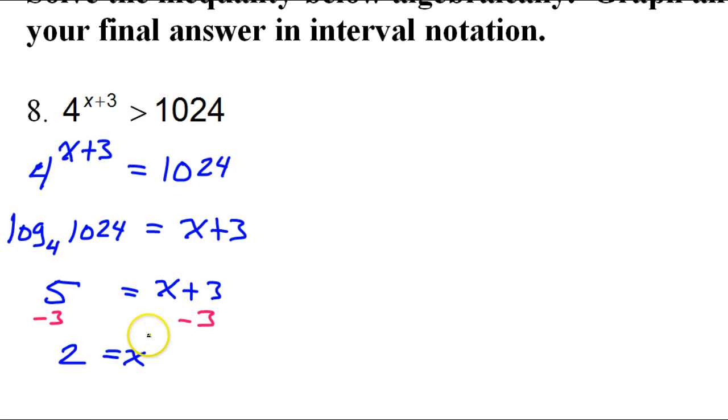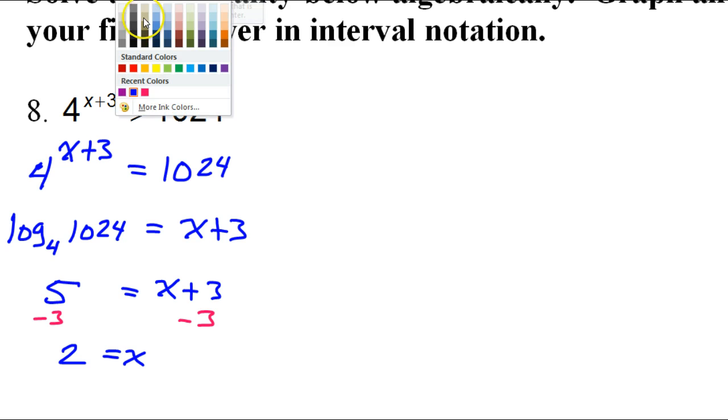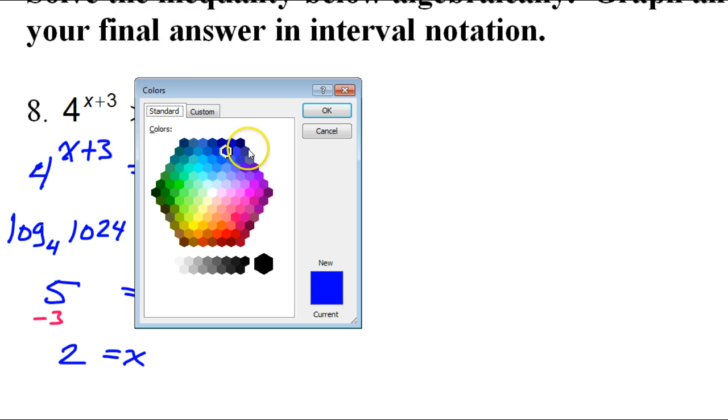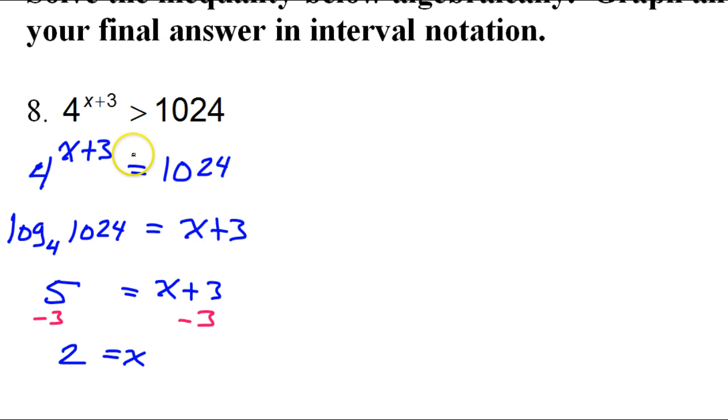So that's not the solution because this is an inequality. But this is giving us a critical value at which to look. So what we will do with that is we're going to graph this critical value on a number line. So here's 2. So we'll graph that as an open circle because it's not or equal to. So we'll leave it as an open circle.